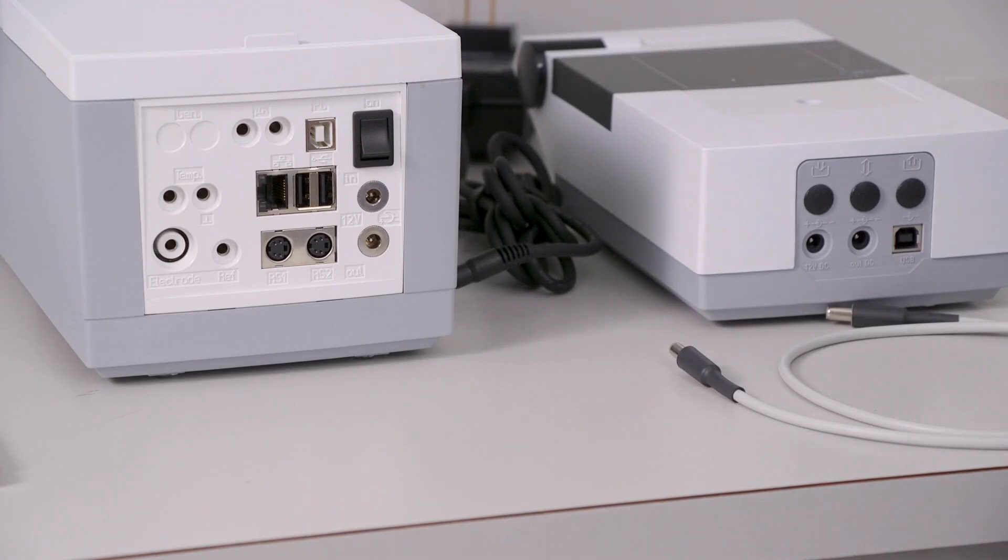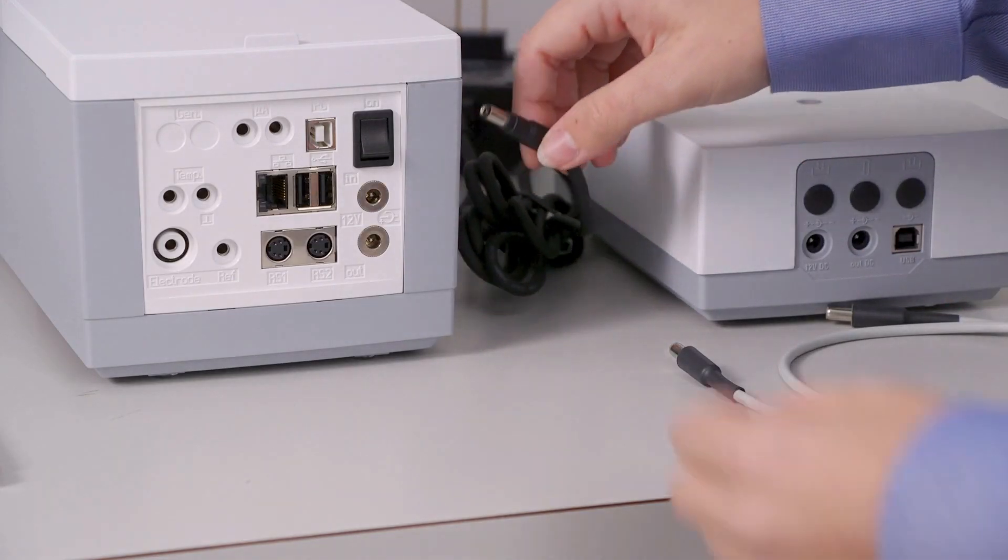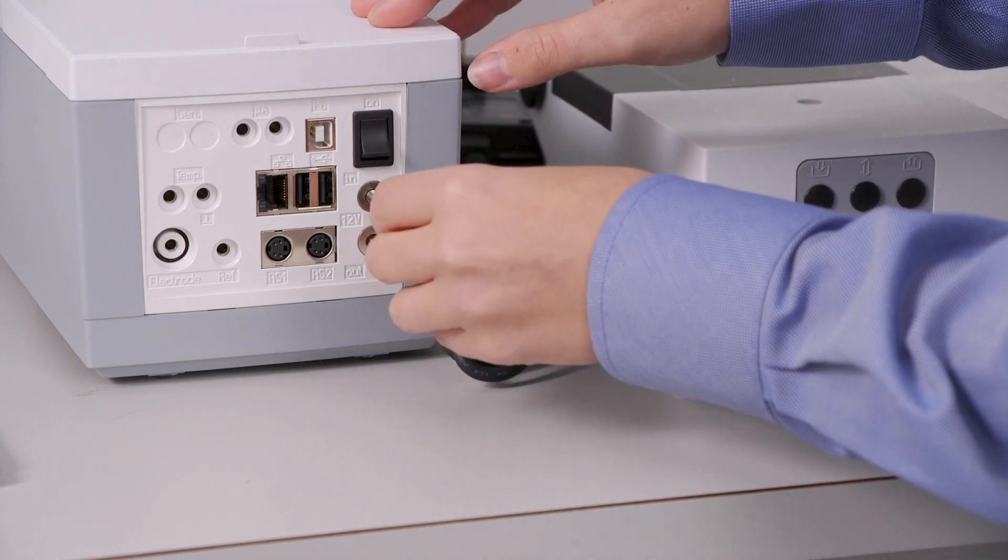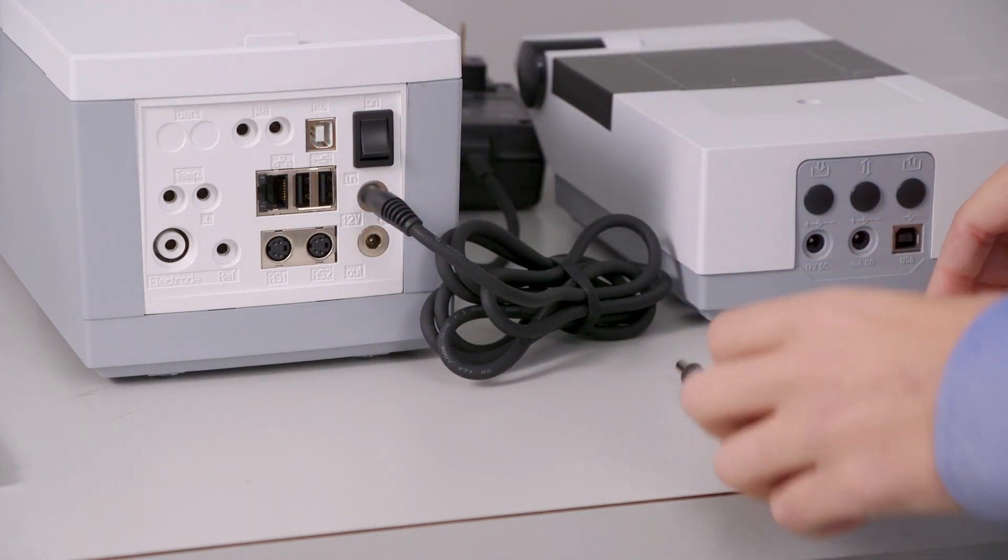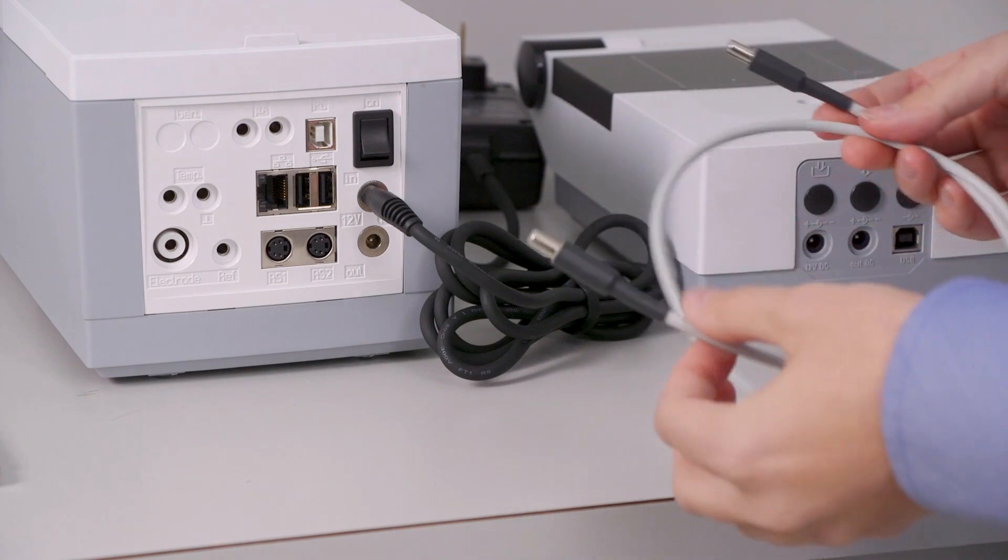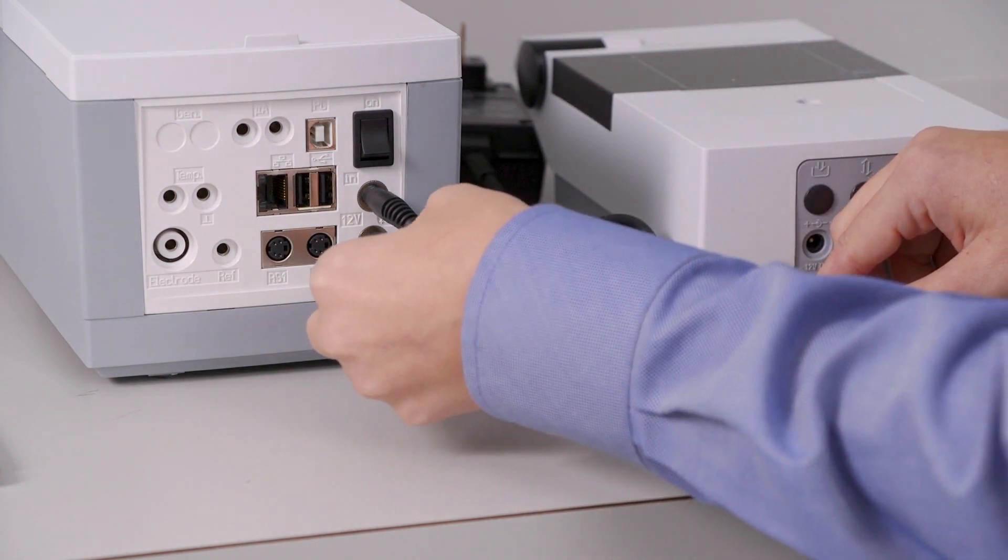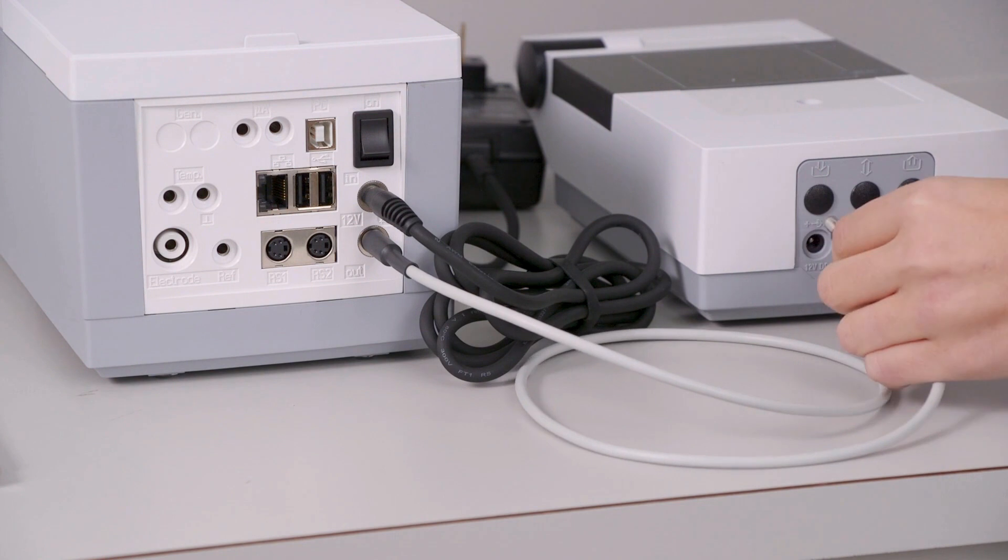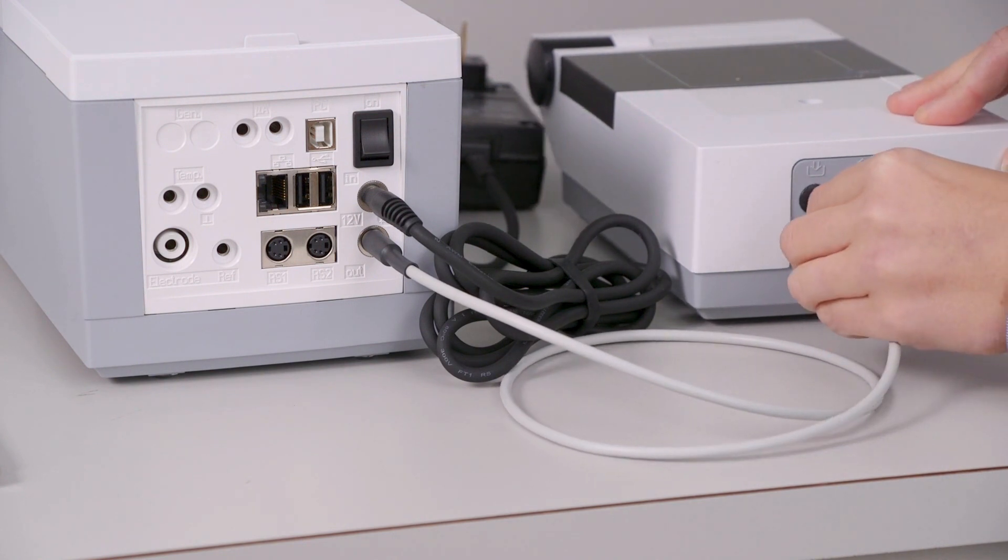We're going to take a look at the back panel of the Titrator. The main power supply will get plugged into the in 12 volt port. The magnetic stirrer cable will get connected by one end into the out port here, and the other end into the in port of the magnetic stirrer.